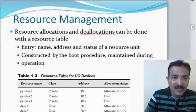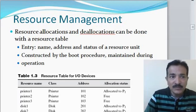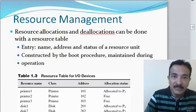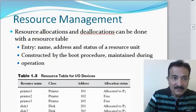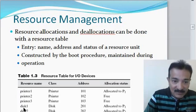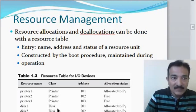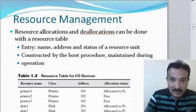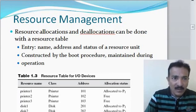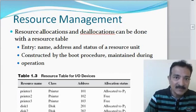Since any part of the disk can be accessed directly, it is possible to treat different parts of the disk as independent devices. Thus, disk 1 and disk 2 in the table are allocated differently — they could be two parts of the same disk.